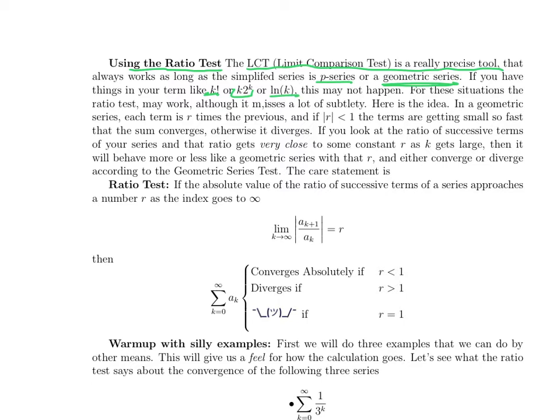But if you have things that are neither, like k factorial or natural log of k, or if you have products of a polynomial times an exponential, then typically the limit comparison test won't help you because it will reduce to something that we don't know whether it converges. In that case, often the ratio test will help, but it tends to be a crude tool, so it often doesn't give you any answer.